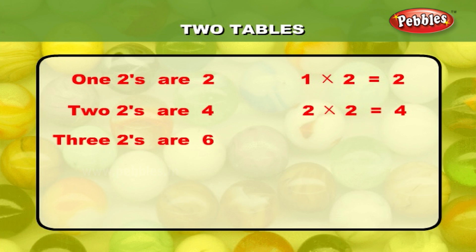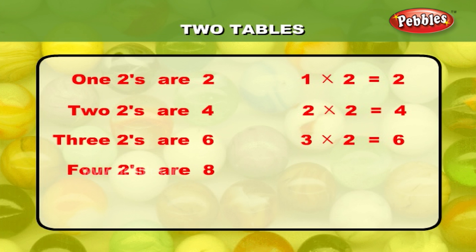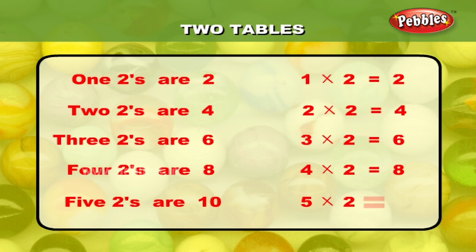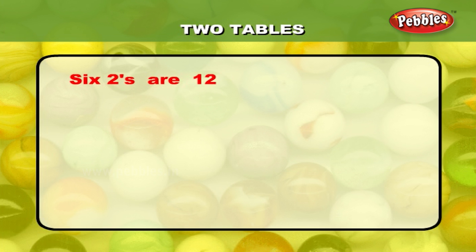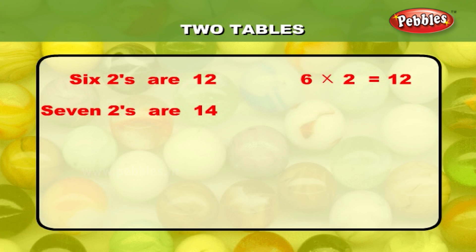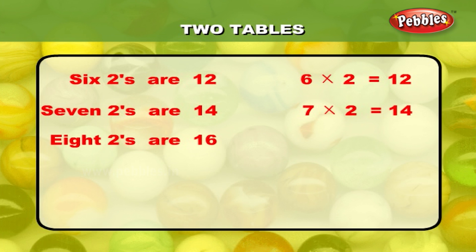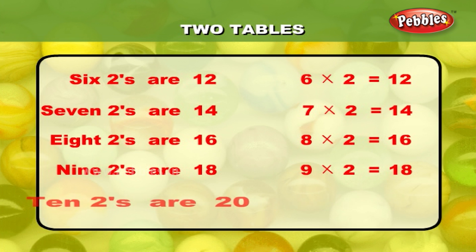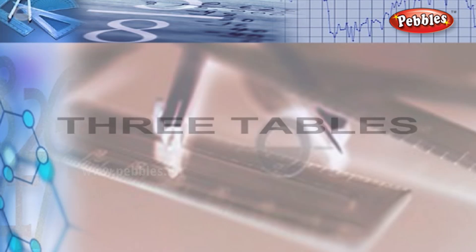4 twos are 8; 4 into 2 is equal to 8. 5 twos are 10; 5 into 2 is equal to 10. 6 twos are 12; 6 into 2 is equal to 12. 7 twos are 14; 7 into 2 is equal to 14. 8 twos are 16; 8 into 2 is equal to 16. 9 twos are 18; 9 into 2 is equal to 18. 10 twos are 20; 10 into 2 is equal to 20.